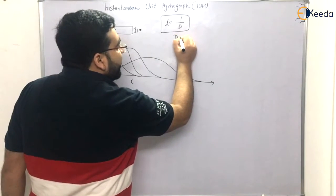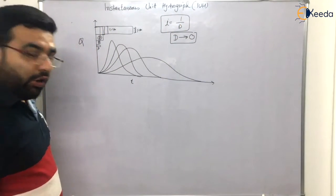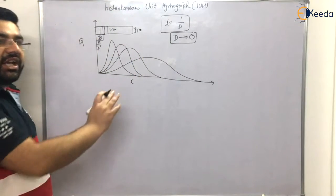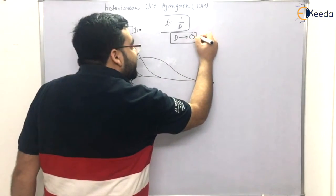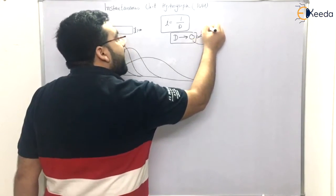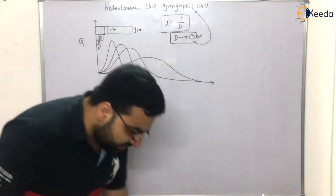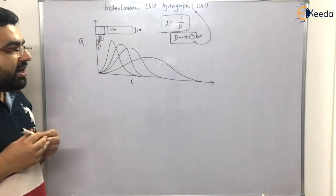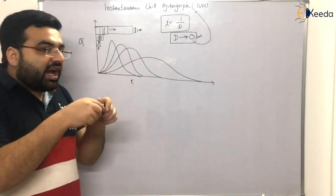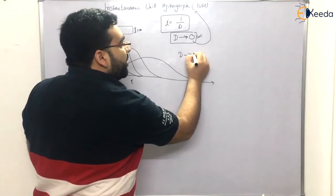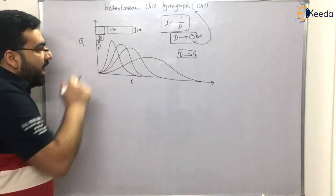Now if D becomes very small — if D tends to zero — then obviously the graph will be extremely skewed, so skewed I cannot even draw it. This situation, when D tends to zero, is known as the Instantaneous Unit Hydrograph. For example, if you are asked to determine the unit hydrograph at three hours duration, that means D is tending to three at that particular point.